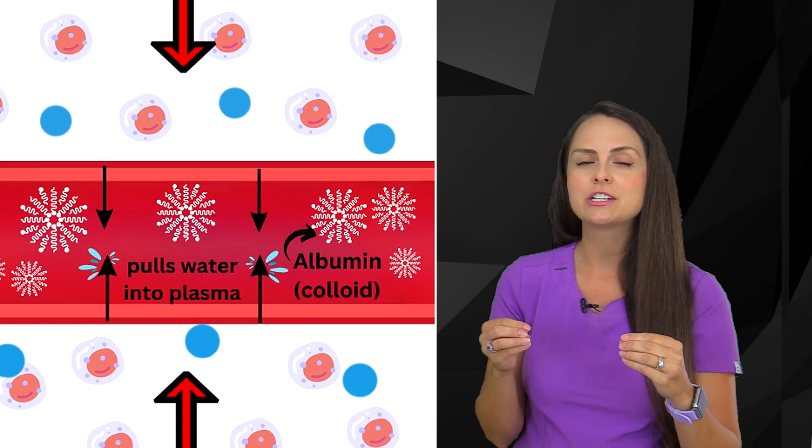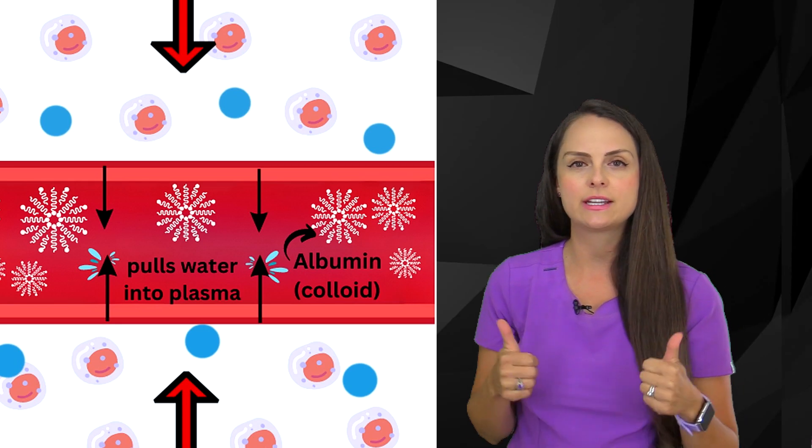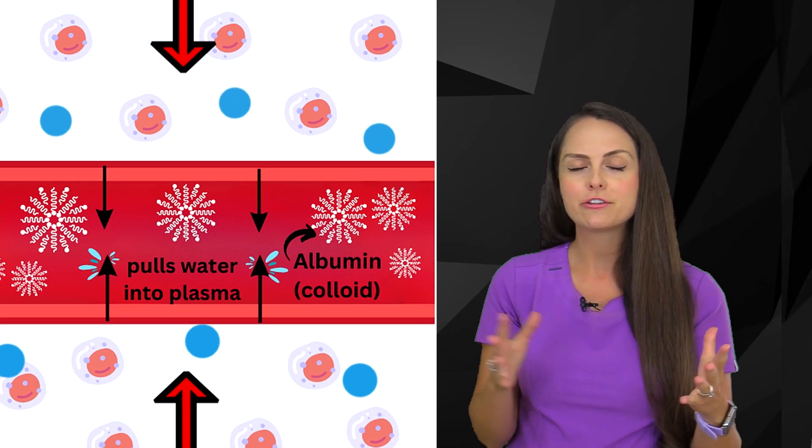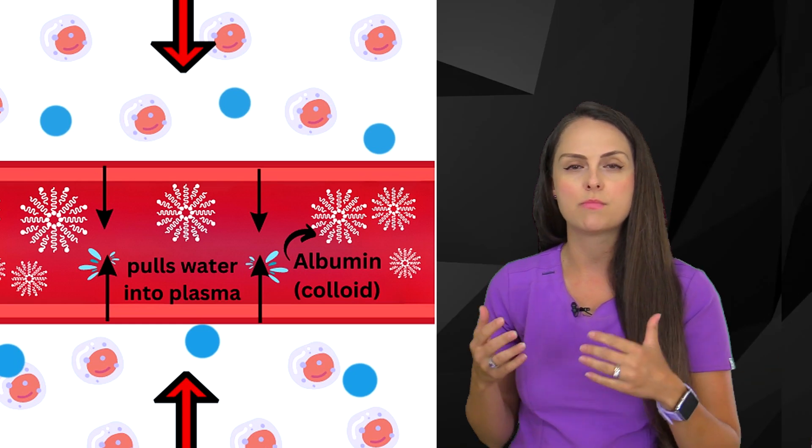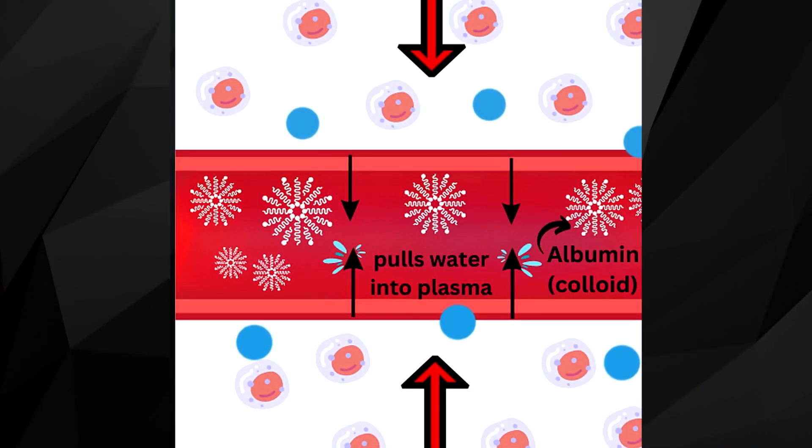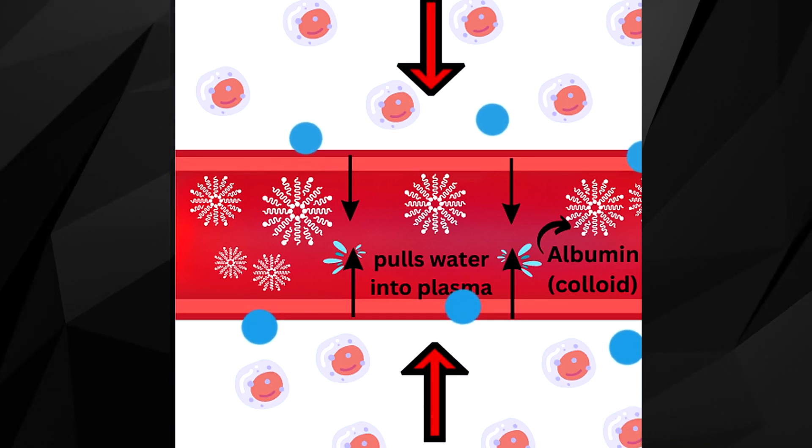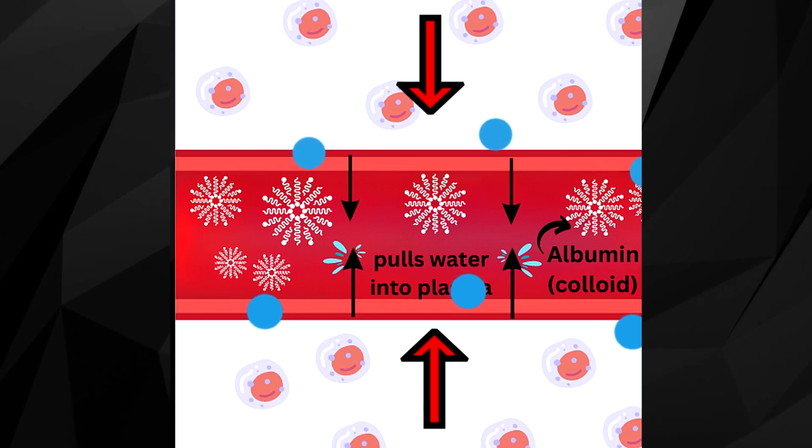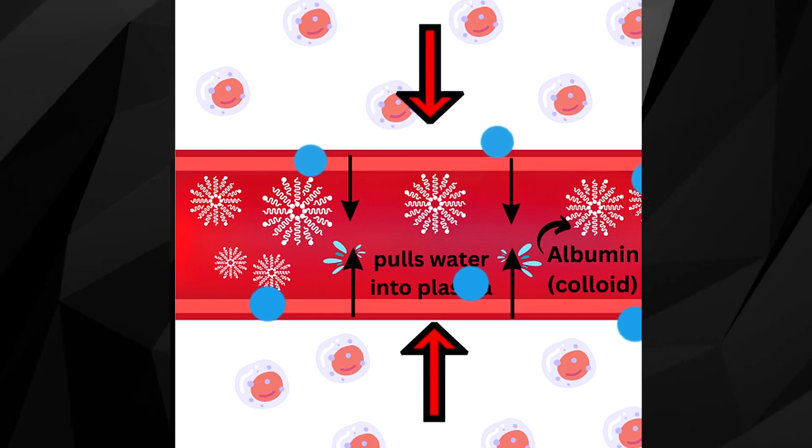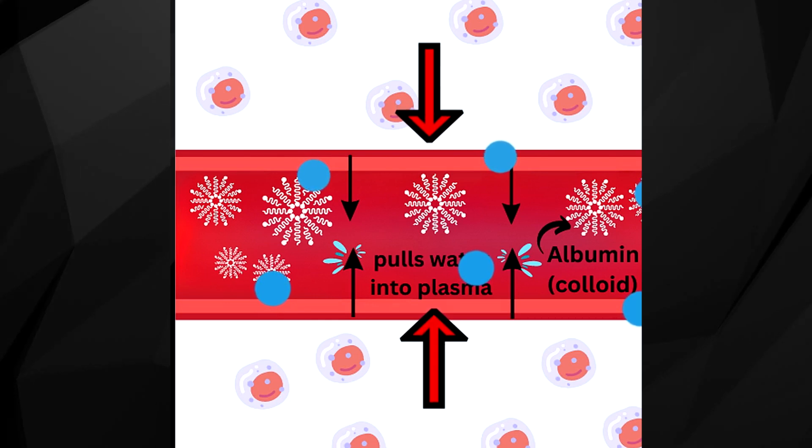So whenever we have a high concentration of something hanging out in there, what's going to happen is that's going to increase oncotic pressure. Another term for oncotic pressure is known as colloid or colloidal osmotic pressure. And this results in water being pulled from around that blood vessel, so from that interstitial fluid. So water is going to be pulled inside that blood vessel, hence our intravascular space, and it's going to expand the volume, the fluid inside that vessel.